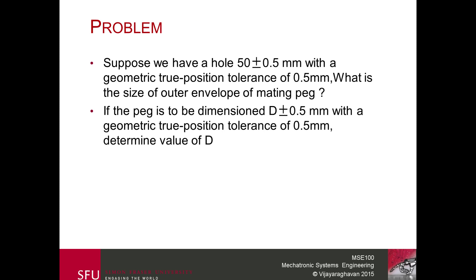Now let's use this information in a worked example. Assume you make the hole first — as is typical since holes are more restrictive. The hole has a tolerance of 0.5 mm on the dimension, so the actual size is 50 plus or minus 0.5, and the geometric true positional tolerance has a diameter of 0.5 millimeters.